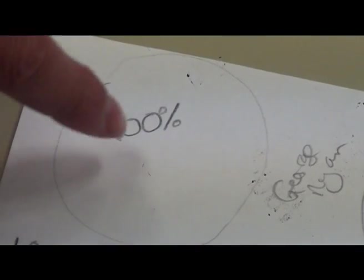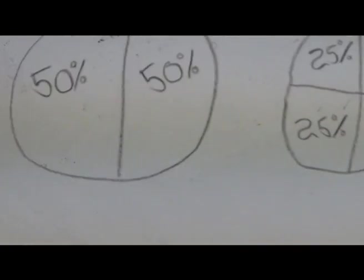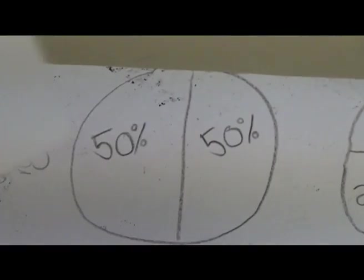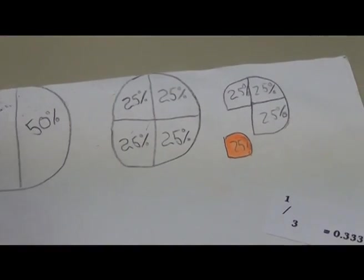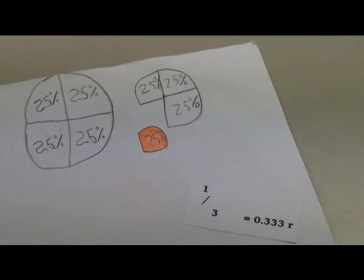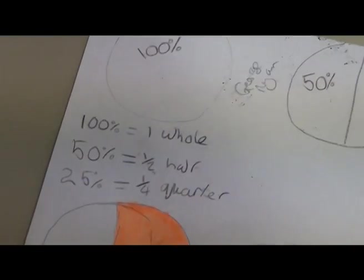There's 100%. Half of it would be 50, so then two 50s would equal 100%, and half of it again would be 25%, which is a quarter. Now if you have a whole 100% and then take 25%, it would be 75%, which would equal three quarters, as it shows there.